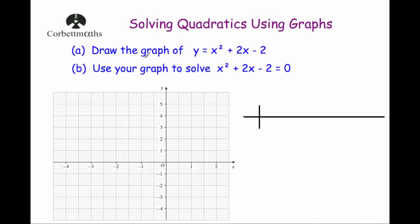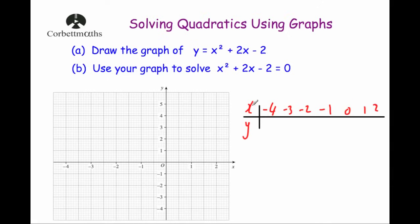Here's our second example. Part a: draw the graph of y equals x squared plus 2x minus 2. Part b: use your graph to solve x squared plus 2x minus 2 equals 0. This is quite common in GCSE where part a asks you to draw the graph and part b asks you to use it to find solutions.